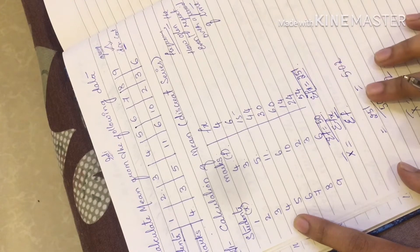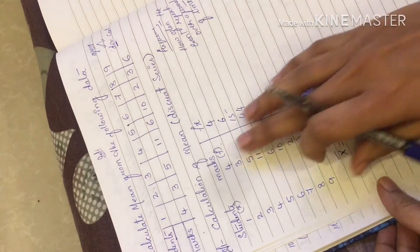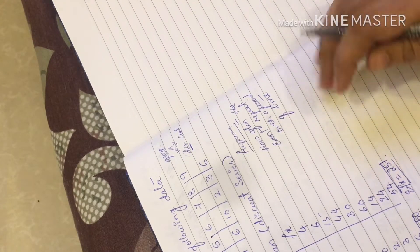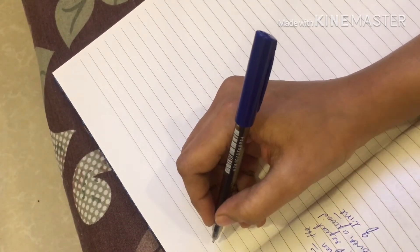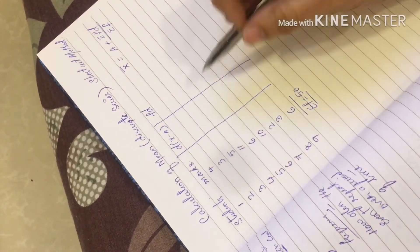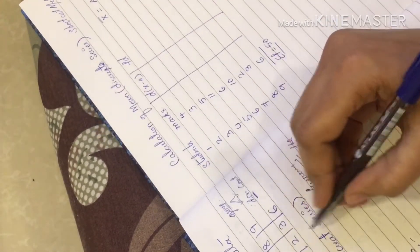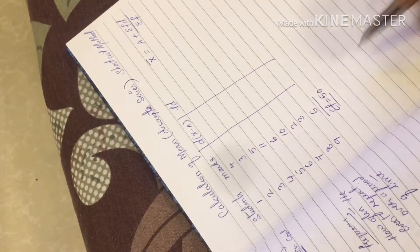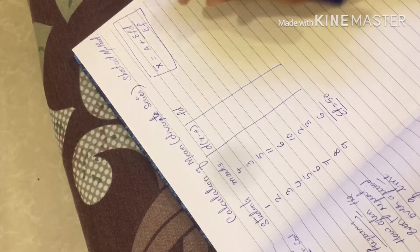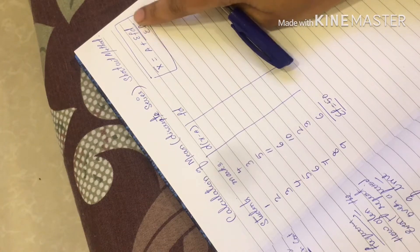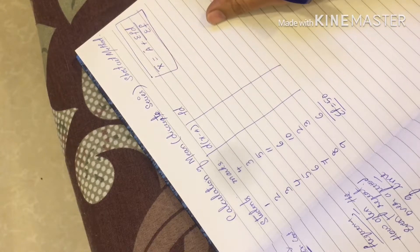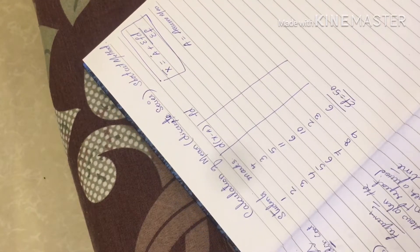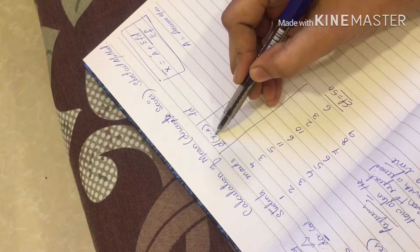Another method we can use for discrete series is the shortcut method. I'm going to take the same example — students and marks. In the shortcut method we have a different formula: mean equals A plus summation of f times d, divided by summation of f. Here A is nothing but the assumed mean, and d is the deviation, calculated as d equals x minus A.